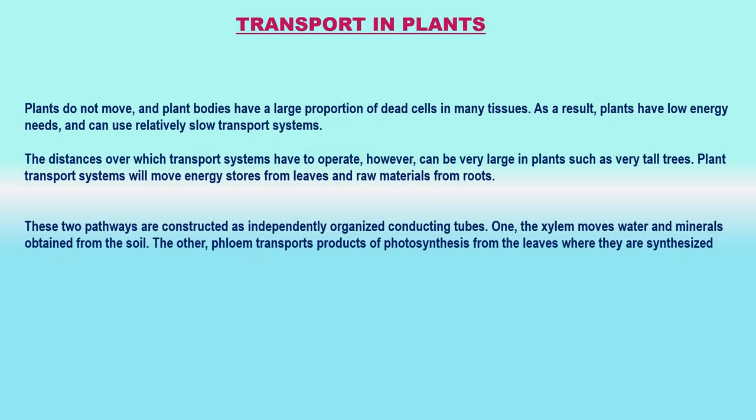Transport in plants: The plants have two transport systems — one is xylem, which carries water and minerals, and two is phloem, which carries the food materials which the plant makes. Phloem also carries the hormones made by the plants in their root and shoot tips. The transport of materials in a plant can be divided into two parts: transport of water and minerals in the plant, and transport of food and other substances like hormones in the plant.